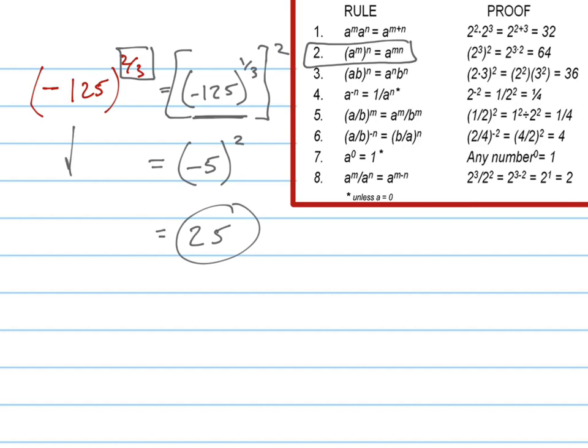You could have also, instead of doing it that way, done it like this: negative 125 squared to the one-third power. But that's really big. That's a big number to do without a calculator, right?